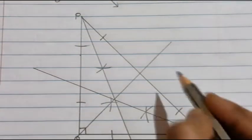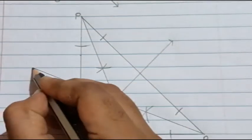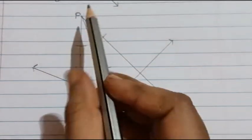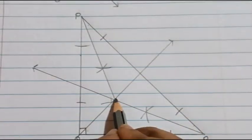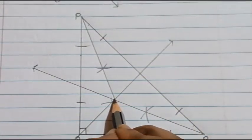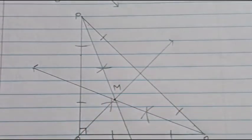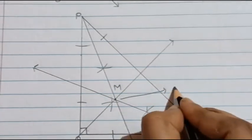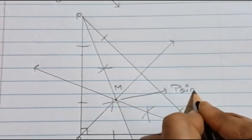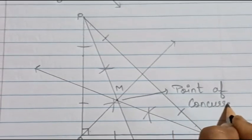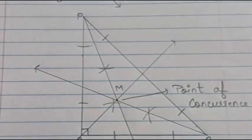I will just add arrows. So here all the angles have been bisected: angle Q is bisected into two parts, angle P is bisected into two parts, and angle R is bisected into two parts. All three angles have been bisected at this point, and I will name it as point M. So this point M is known as the point of concurrence.